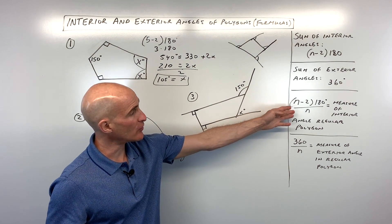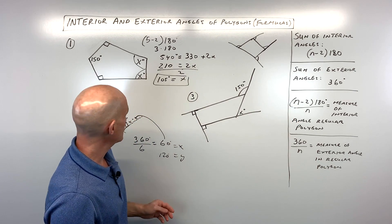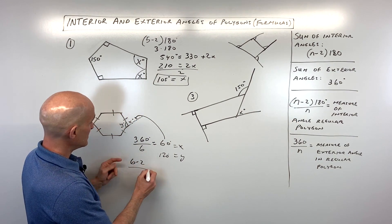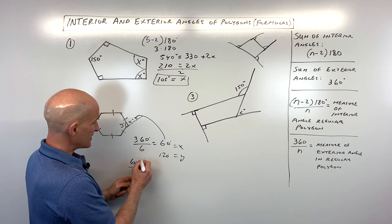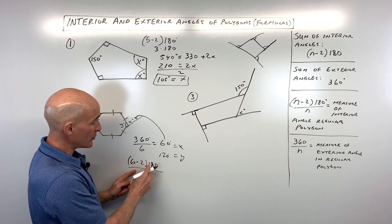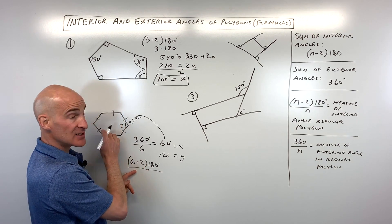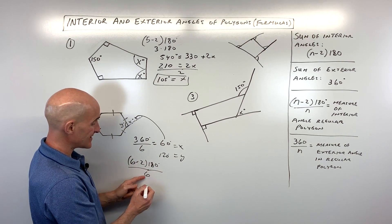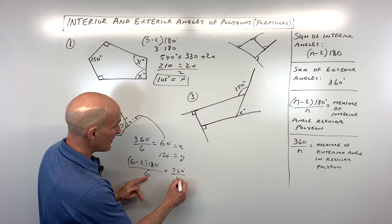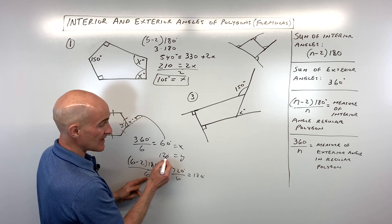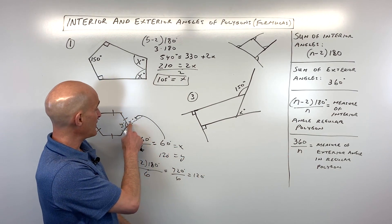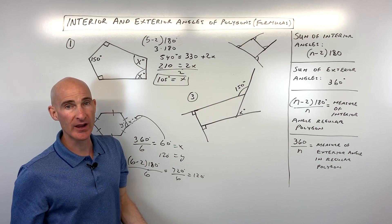To find the interior angle, you can see this forms a straight line, so if the exterior angle is 60, the interior angle must be 180 minus 60 — they form a linear pair — so y equals 120 degrees. The other way is to use the formula: (6-2) times 180 = 720, then divide by 6 to get 120. So both methods give the same answer.